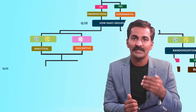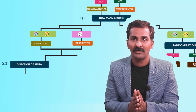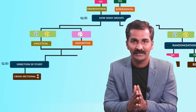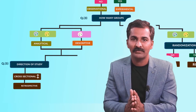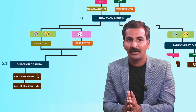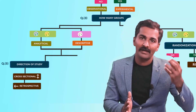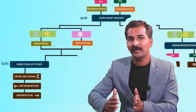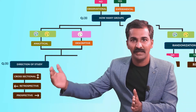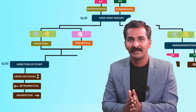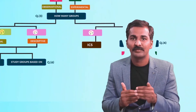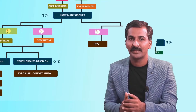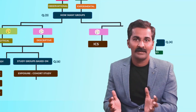The next question concerns the direction of your study. If you start your study now and do all assessments instantaneously without following forward or backward, that is a cross-sectional study. If your outcomes have already occurred and you follow patients backward in time looking at past events, that is a retrospective study. If you start now and wait for your outcome to happen in the future — after one, five, or ten years — that is a prospective study. The final question is: what are your study groups based on? If based on the risk factor or exposure, they are cohort studies; if based on disease or no disease, they are case control studies.